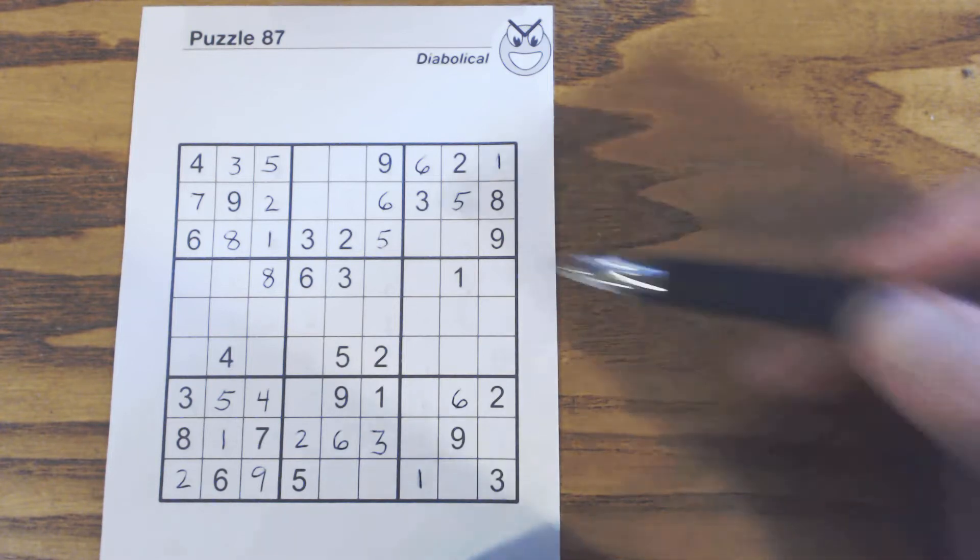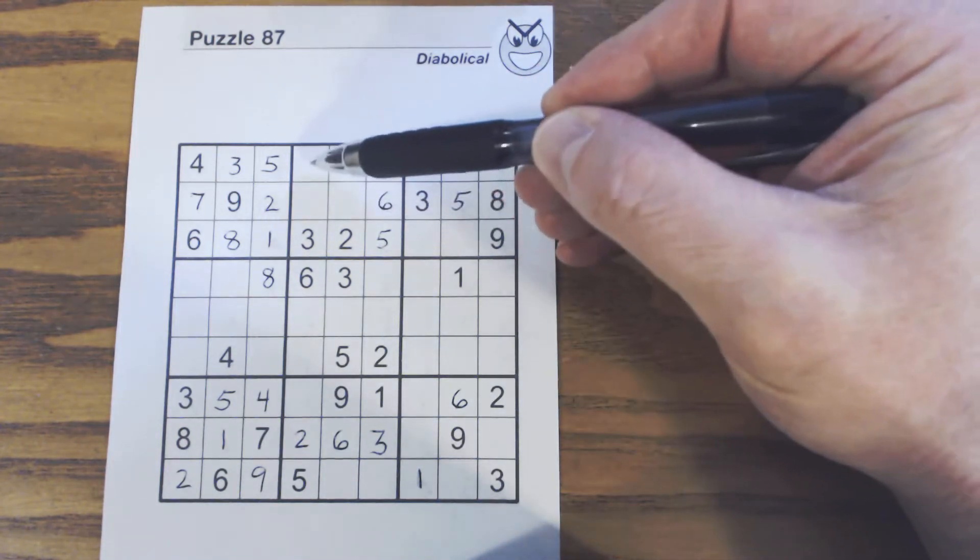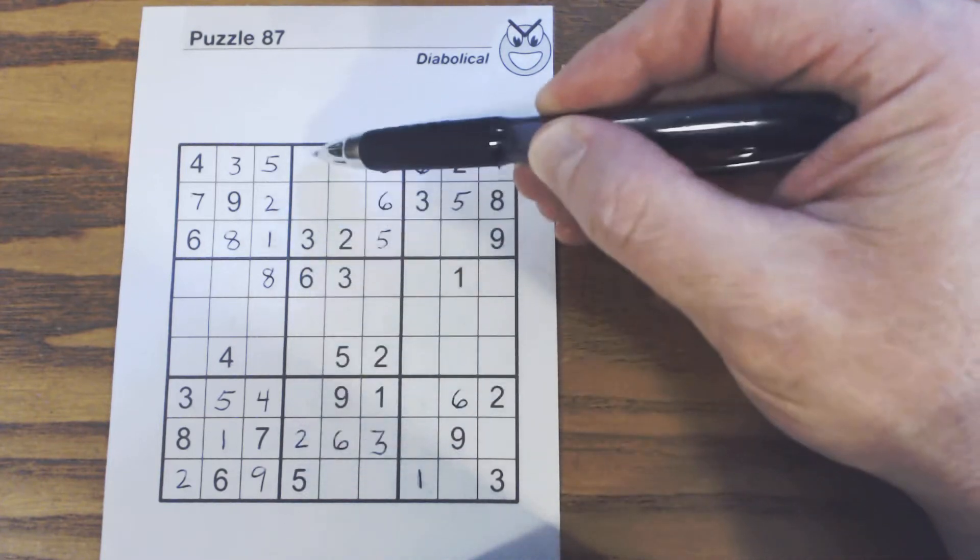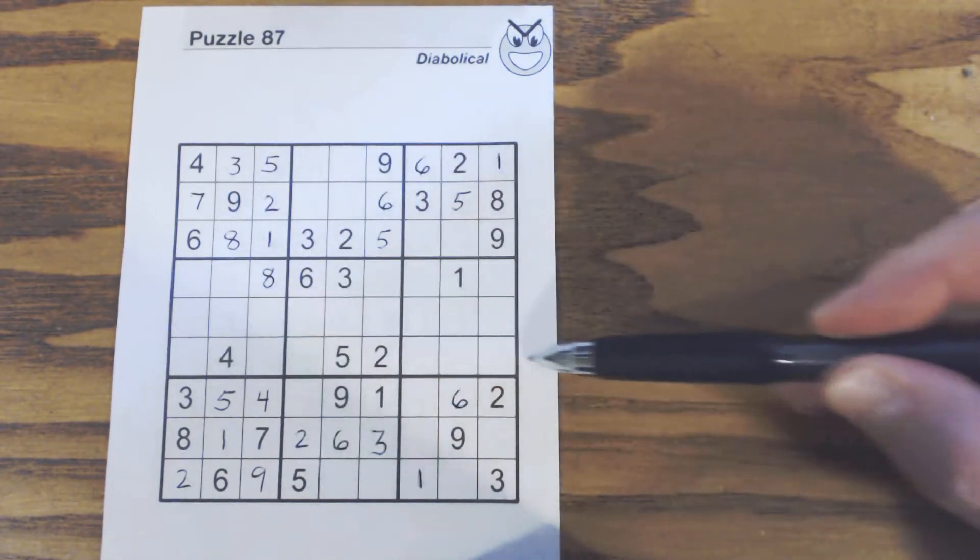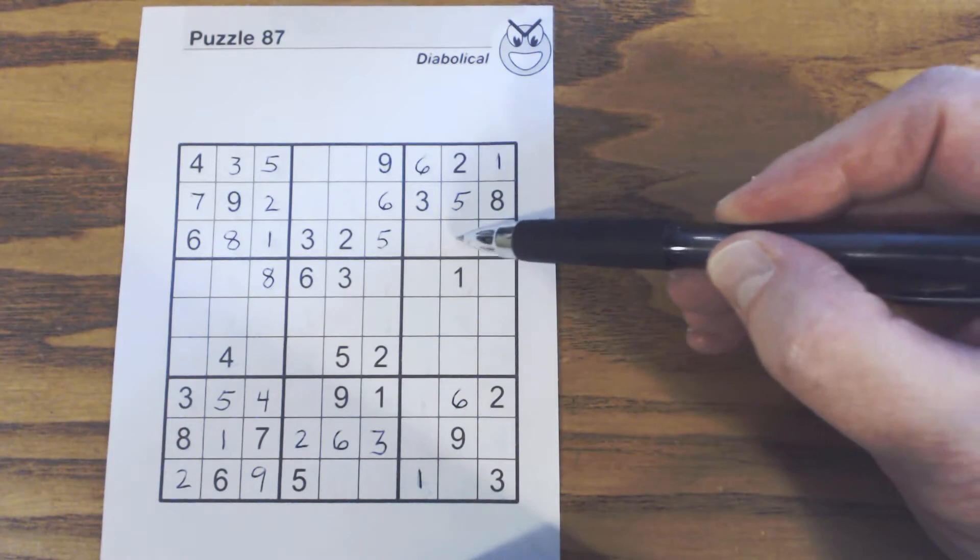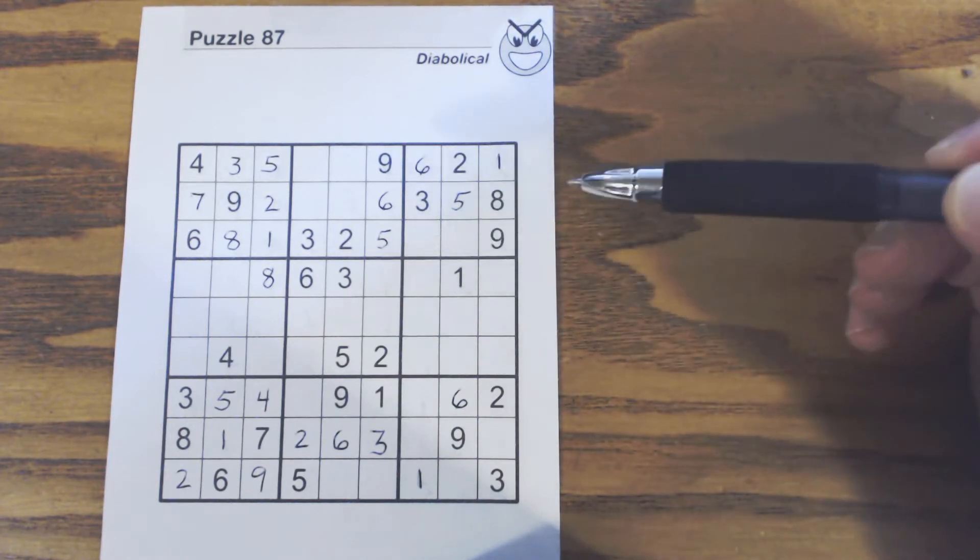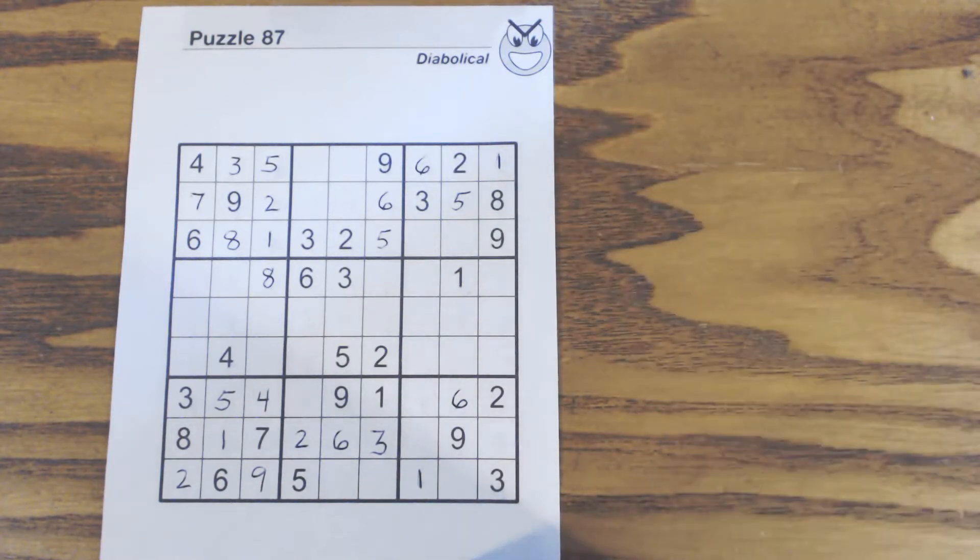And I'll give you a hint, a couple of hints. There's something in this column right here, in this row, that will help us solve these 4-7s right here. So if you'd like to, stop the video and take a look at it and see if you can figure it out. If not, we'll plow ahead with the resolution.